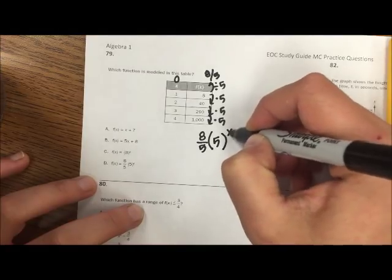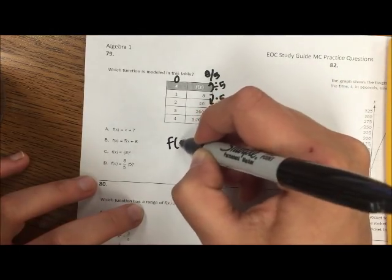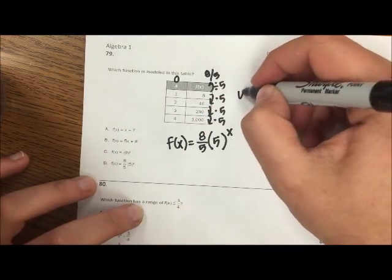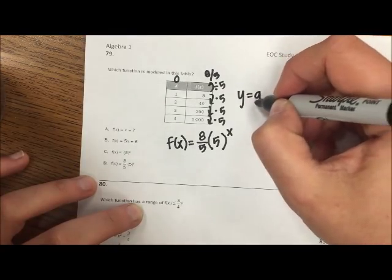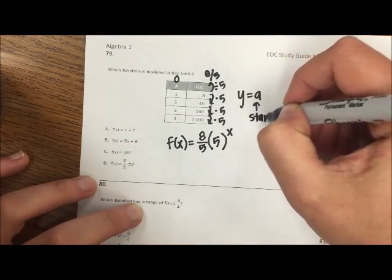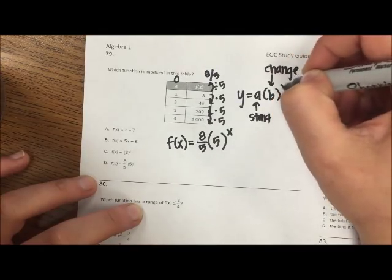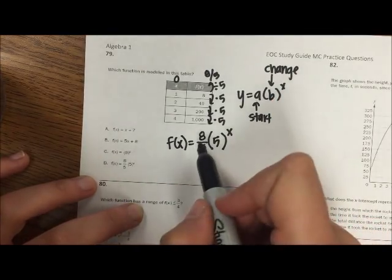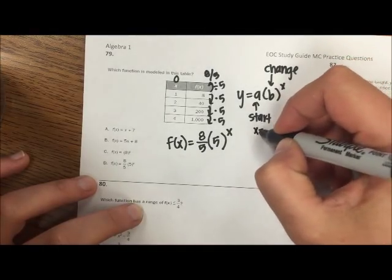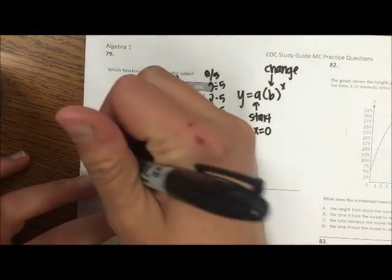How I start times how I change to the x. Remember exponential, how you start times how you change to the x. And you're starting is when x is 0. So that would be D.